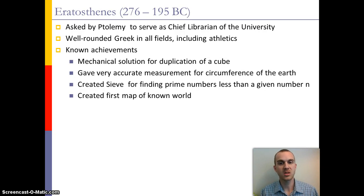Another important mathematician at the time was Eratosthenes. He was said to live around 276 to about 195 BC and he was asked to serve as the chief librarian at the university. He was said to be well-rounded in all fields and was often known as Beta because he was very good at many things but never the best at anything. He was known to have come up with many different achievements such as measuring the circumference of the earth, creating the sieve to help find prime numbers, and creating the first known map of the world.